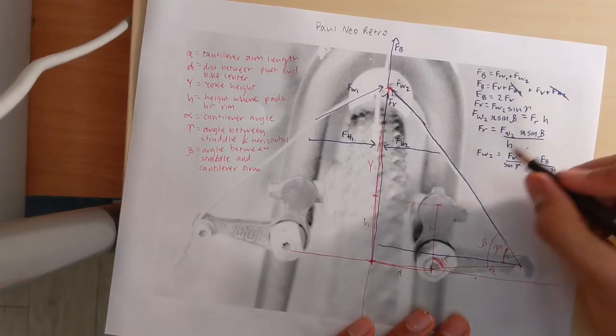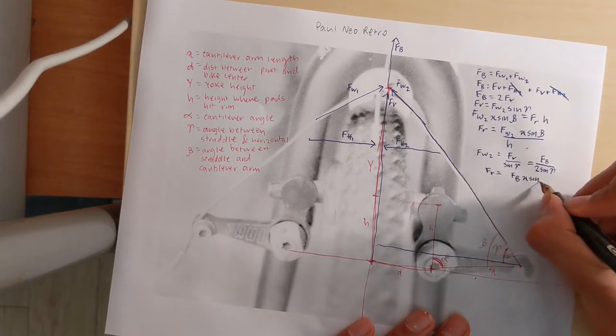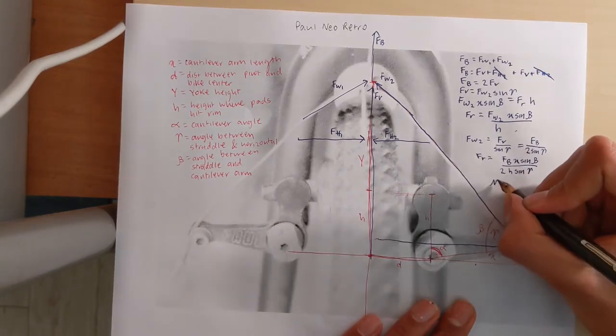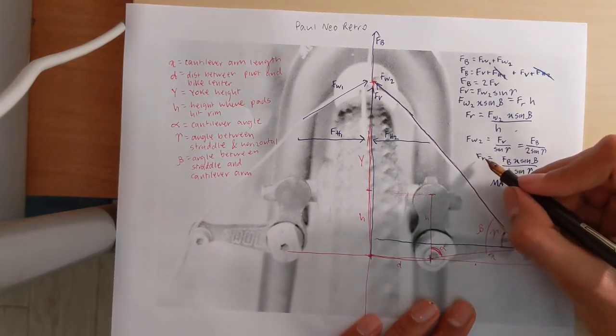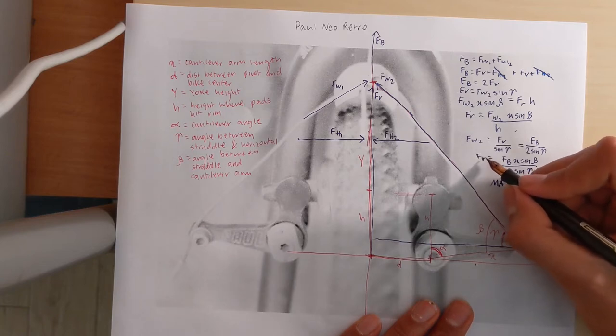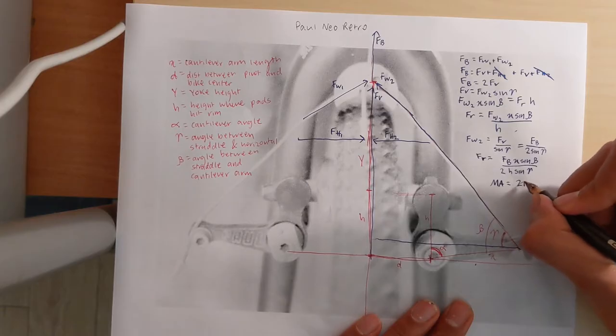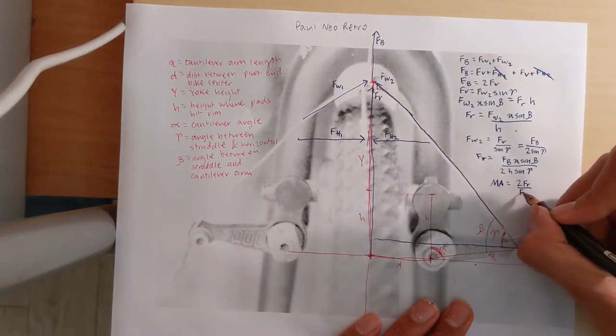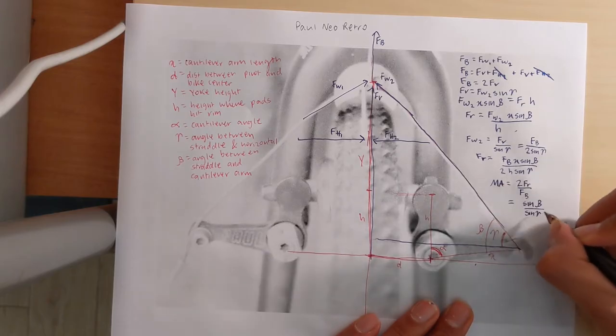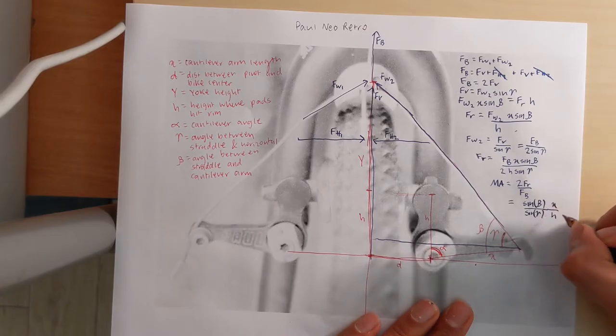And then we can substitute into the rim. So mechanical advantage is force output, which is the force on both sides of the rim. So that is 2Fr over force input, sine beta over sine gamma times x over h.